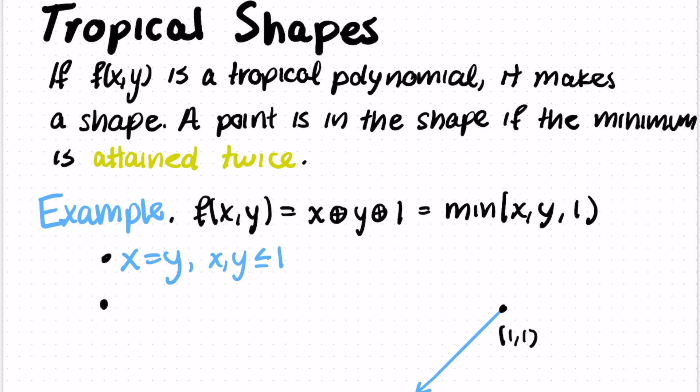Then another possibility is that x is equal to 1 and y is greater than or equal to 1. And this gives us the green ray of points emanating upwards from the point 1 comma 1. The last thing that can happen is that y is equal to 1 and x is greater than or equal to 1. And this gives us the pink ray emanating from the point 1 1 just going outwards to the right. And this thing is called a tropical shape.